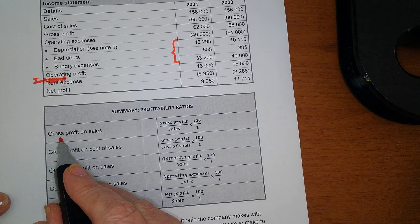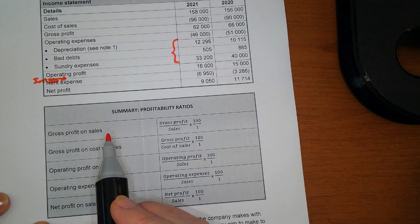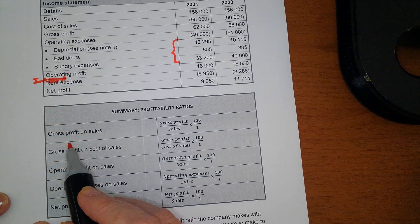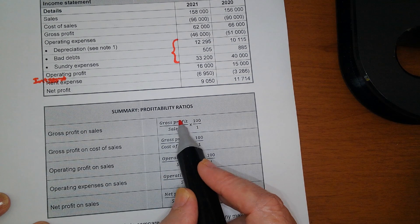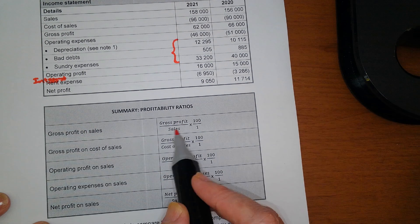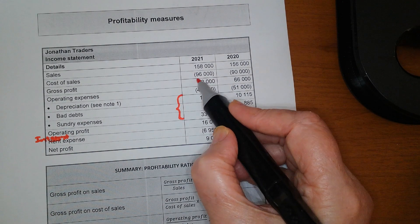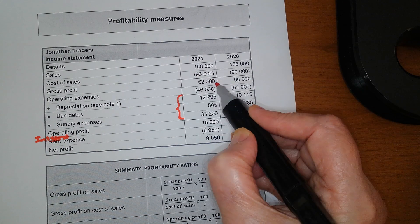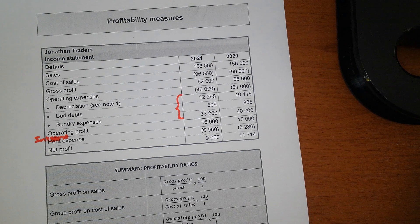The first measure is gross profit on sales. This is the easiest of the profitability calculations — gross profit goes on top and sales goes on the bottom. So I take the gross profit of 62,000 divided by sales of 158,000 times 100, and that tells me the profit percentage on sales.